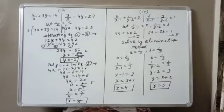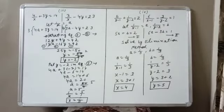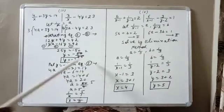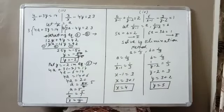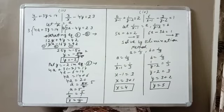So in this way the first step is to change the equation into a linear equation in two variables, then find the values of a and b, and finally convert a and b back into x and y. Tomorrow we will study the 5th and 6th parts.